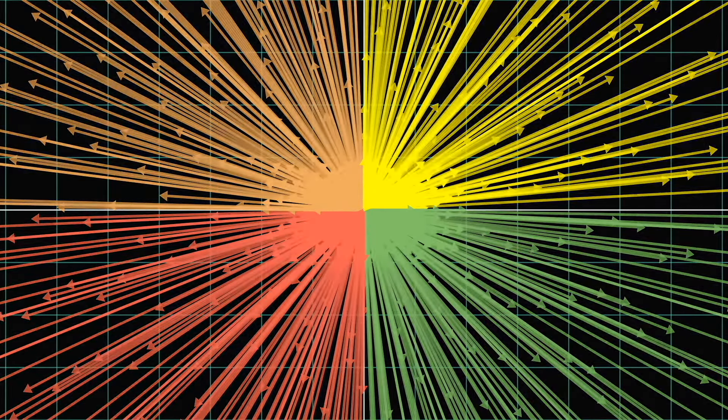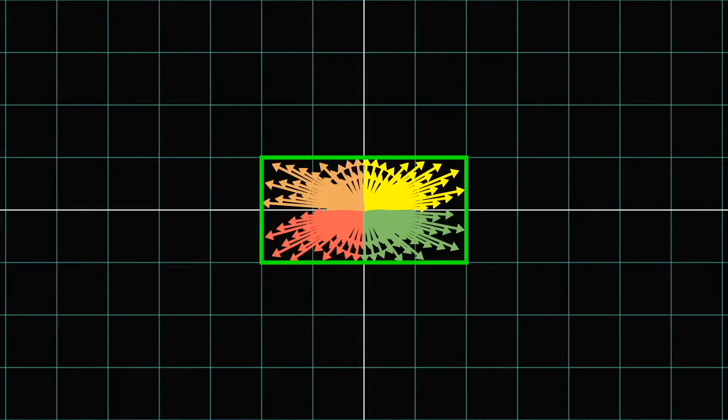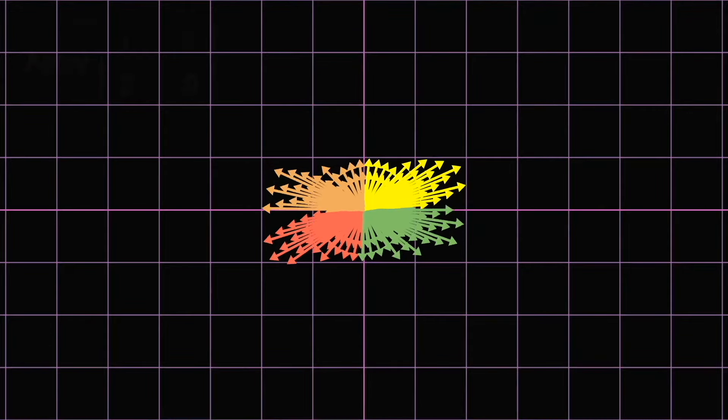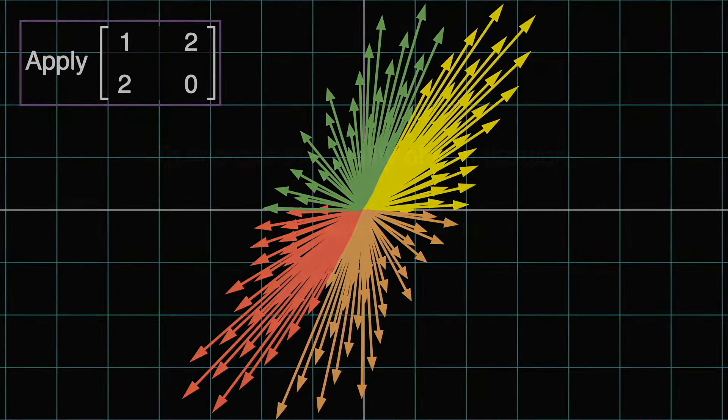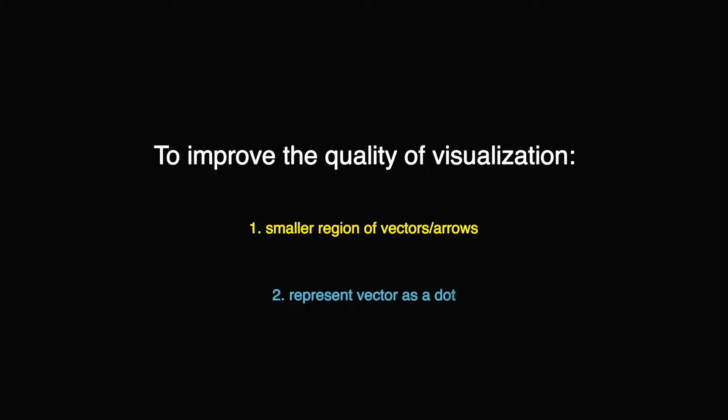So, to improve the quality, we're going to apply two tricks. Firstly, let's squint our eyes and focus on a smaller region of vectors.